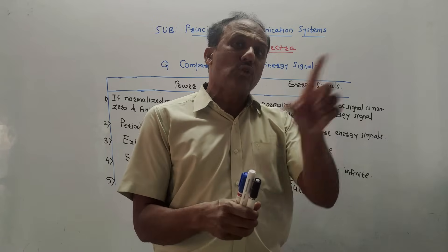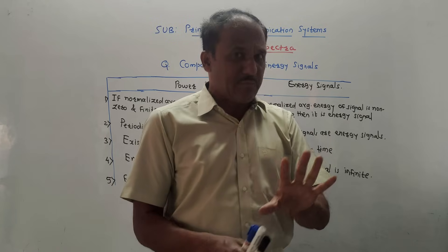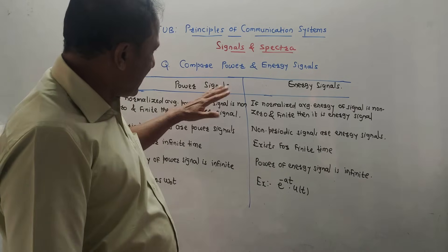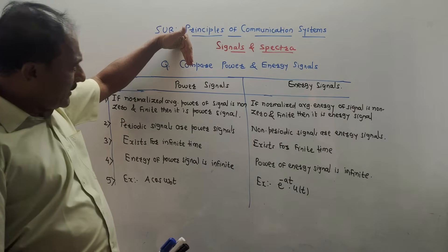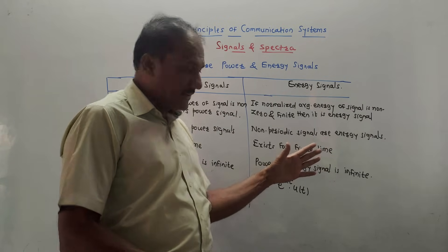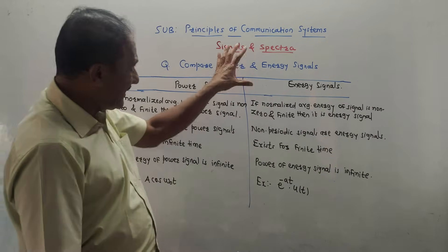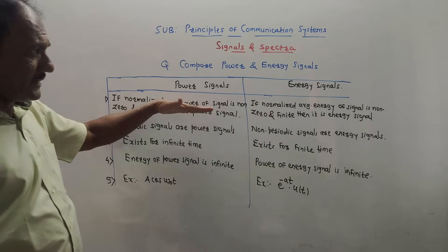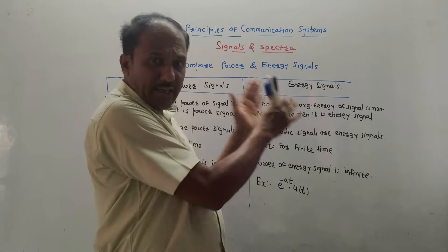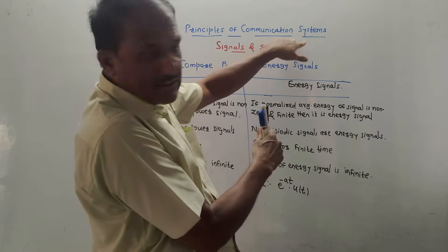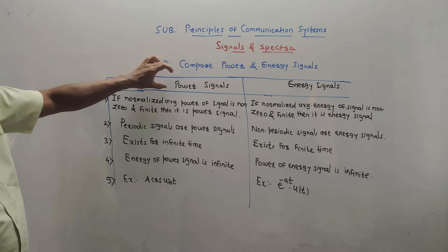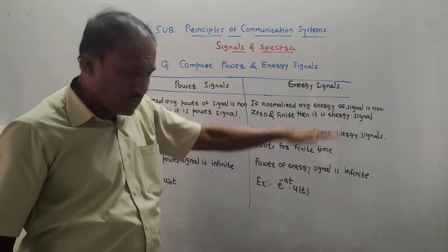That point is common for three subjects. Now, the point I haven't covered in Signals and Systems is the comparison between power and energy signals, because it is not expected there but is quite expected in this subject. So let us discuss this comparison. I am requesting you to watch all the videos related to Unit 1 of PCS — Principles of Communication Systems. Let us discuss this comparison.